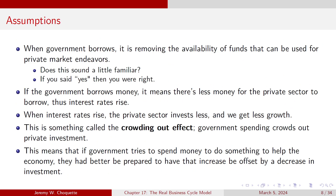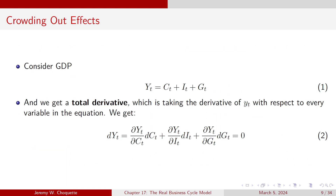When the government borrows, it removes funds that can be used for private market endeavors. There's less money for the private sector to borrow, so interest rates go up. When interest rates rise, the private sector can invest a lot less and we get less growth. This is known as the crowding out effect — government spending crowds out private investment. If a government tries to spend money to help the economy, that increase will be offset by a decrease in investment.